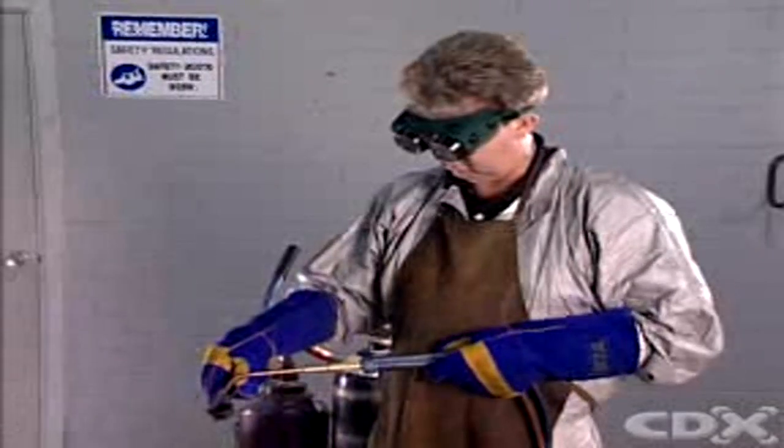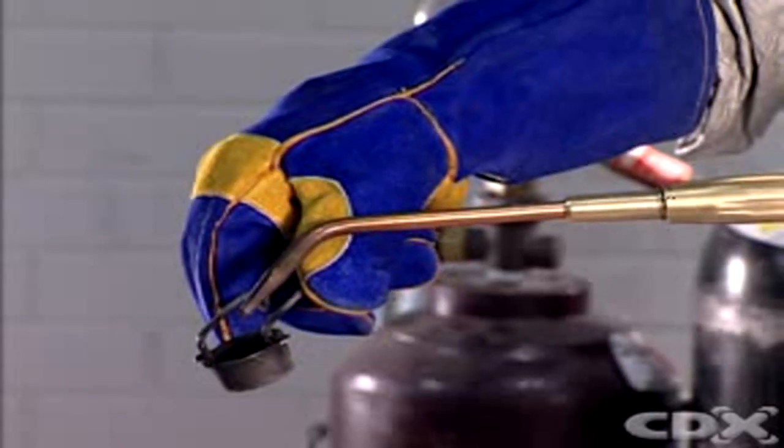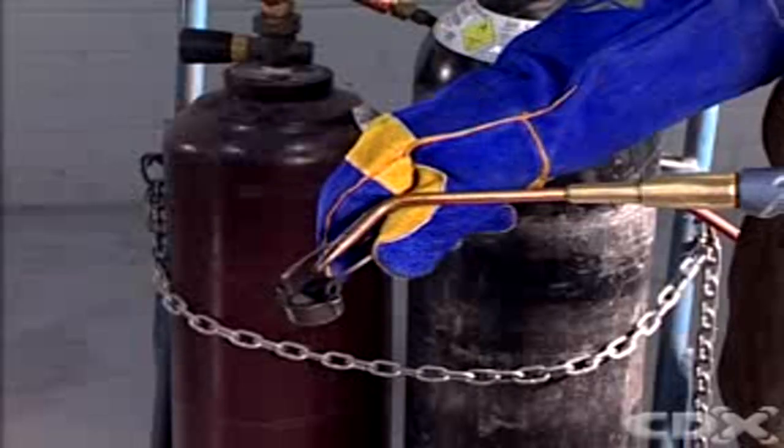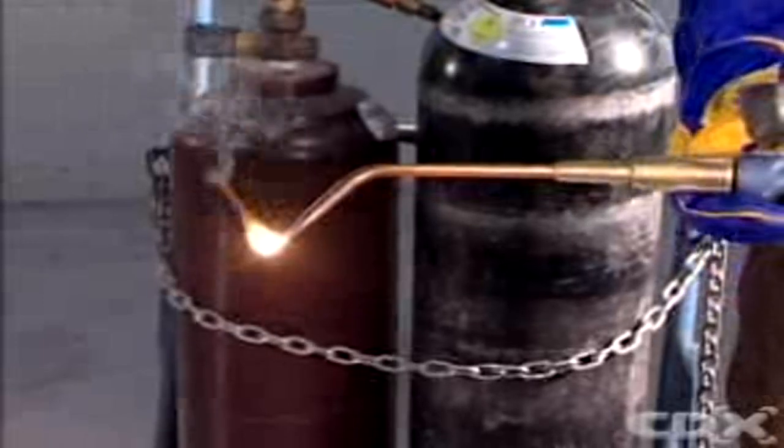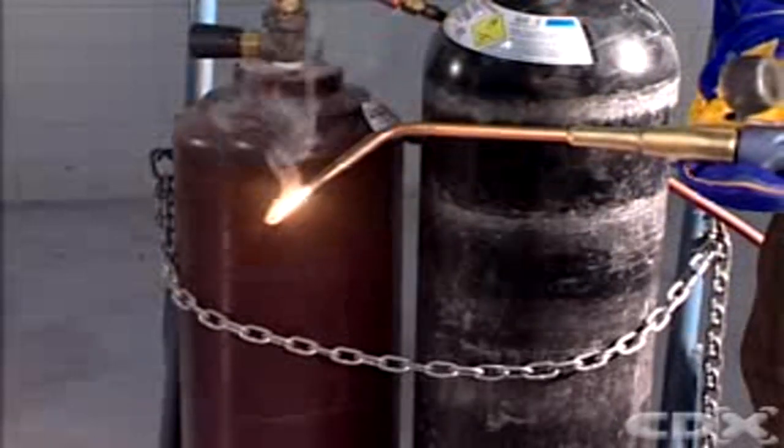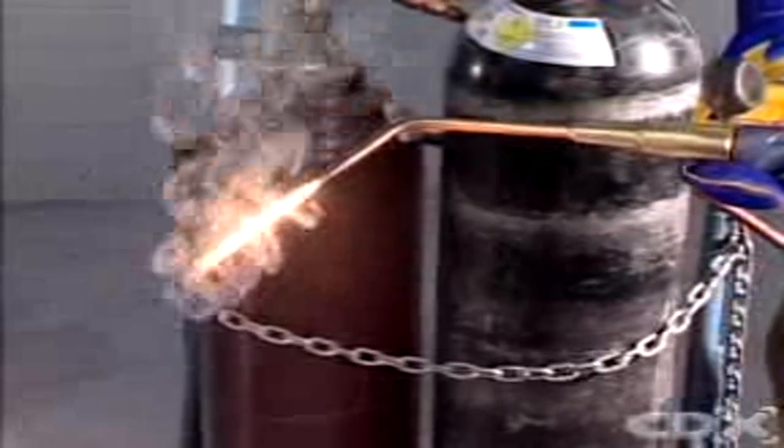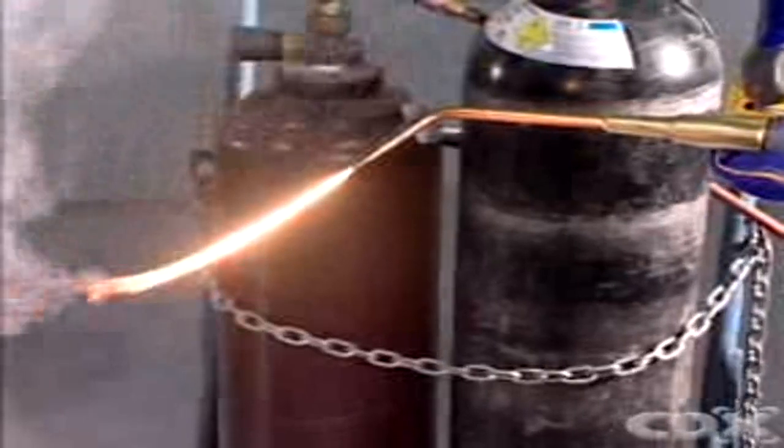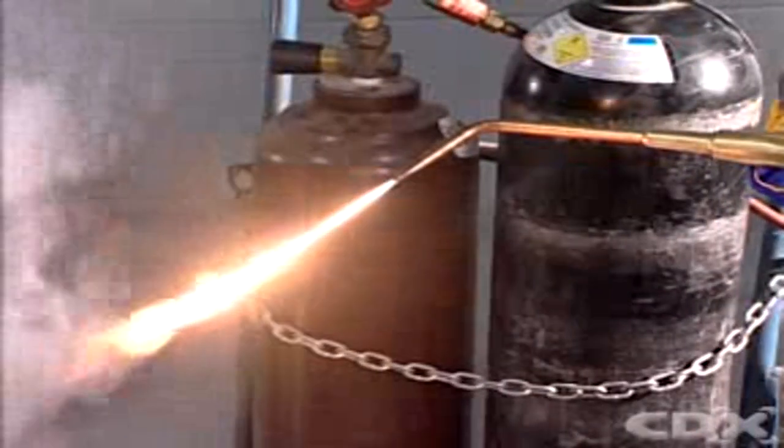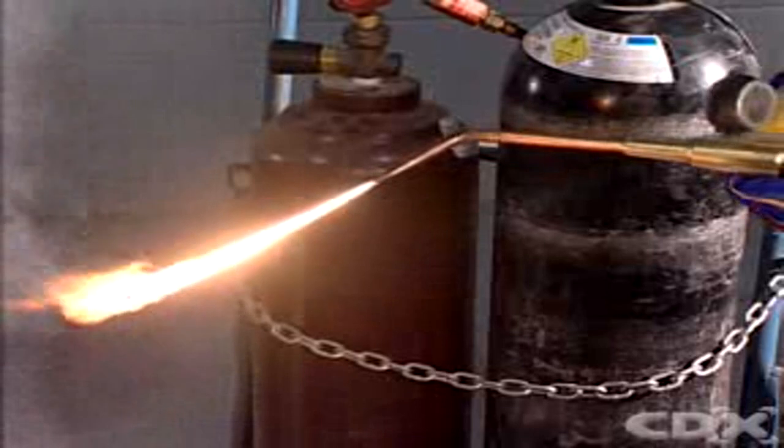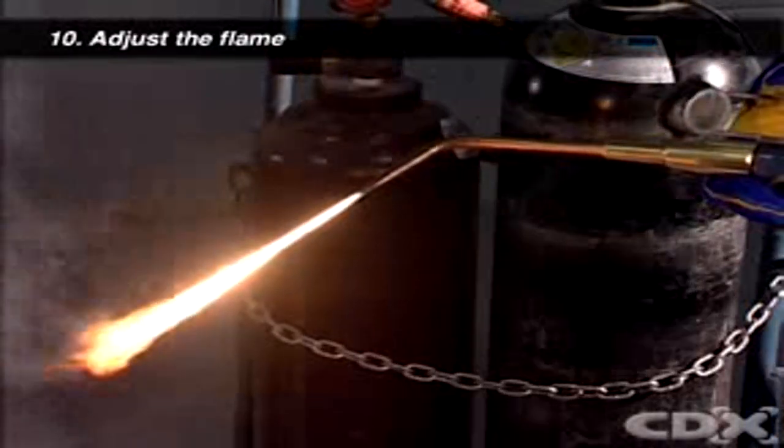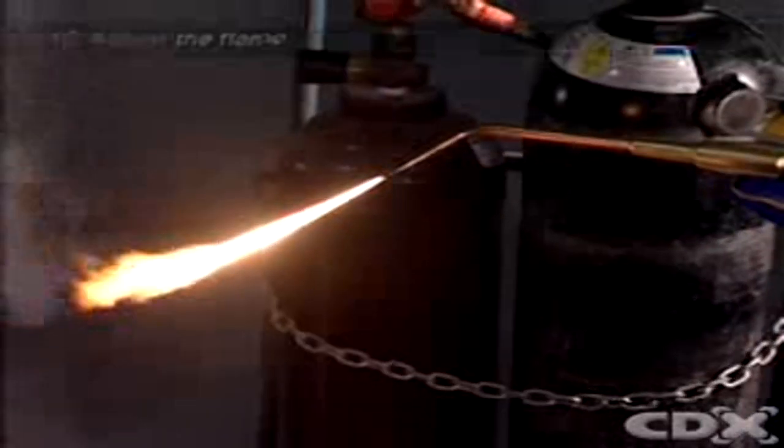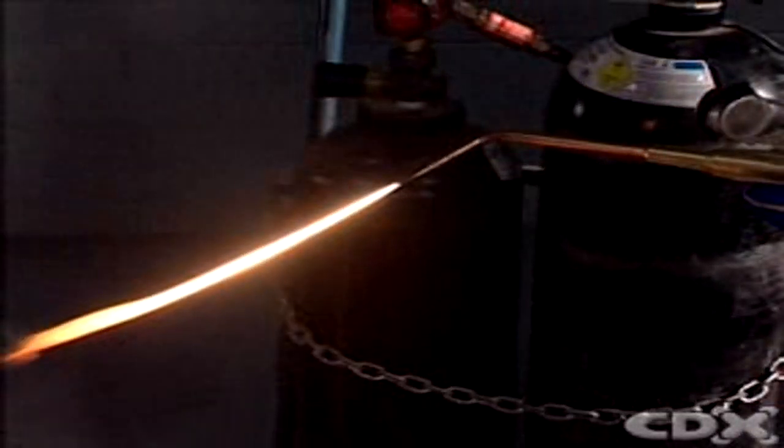Hold the striker against the tip of the torch with the lighter cup between the torch and you. Flick the striker to create the spark that will ignite the gas at the tip of the torch. Open the acetylene valve slowly until the sooty smoke produced by the torch disappears. Then slowly open the oxygen valve on the torch handle. As you open the oxygen valve, you will see the color of the flame change.